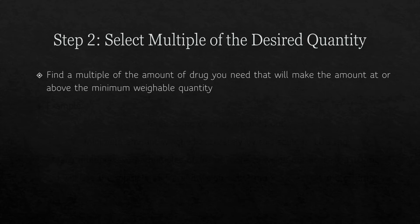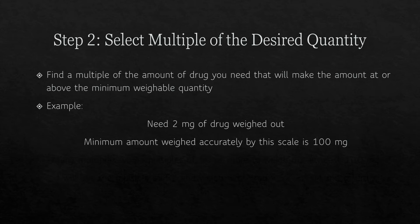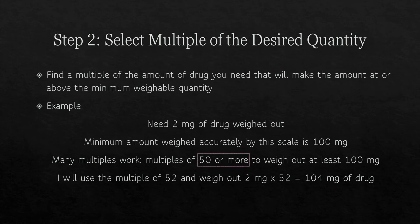Step 2: select the multiple of the desired quantity. You want to find a multiple of the amount of drug you need that will make the amount at or above the minimum weighable quantity. For example, if we need 2 milligrams of drug and the minimum weighable quantity is 100 milligrams, we divide 100 by 2 to get a multiple of 50 or more. Multiplying 2 milligrams by 50 or more gives 100 milligrams or greater, which the scale can weigh.